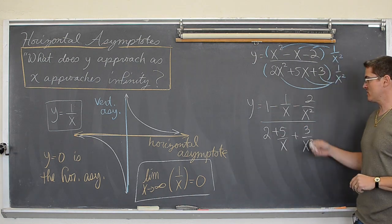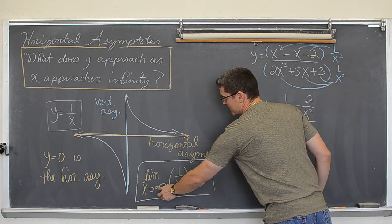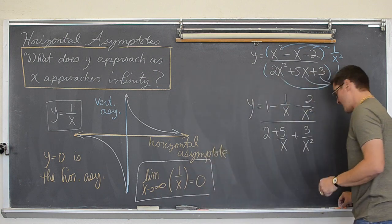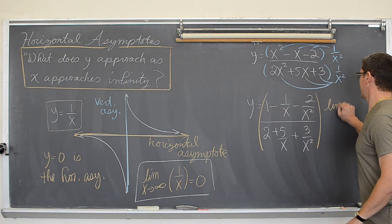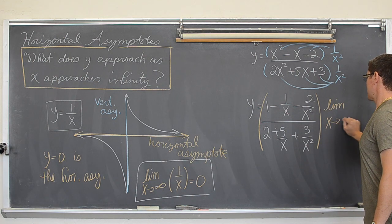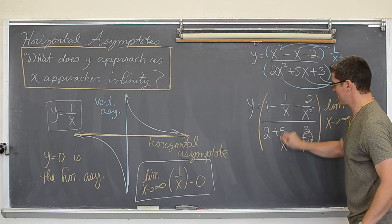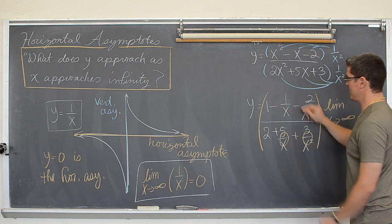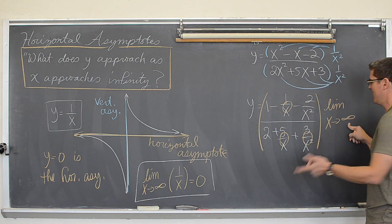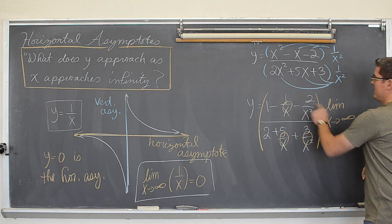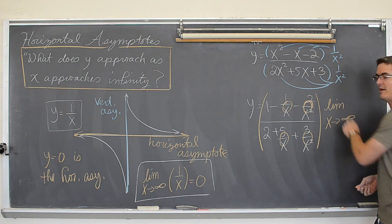All of that over: 2x squared times 1 over x squared is 2, plus 5 times x over x squared is 5 over x, plus 3 over x squared. Horizontal asymptotes are about when x approaches infinity, not close to zero. So we let x approach infinity: 1 over x approaches zero, 2 over x squared approaches zero, 5 over x approaches zero, and 3 over x squared approaches zero.